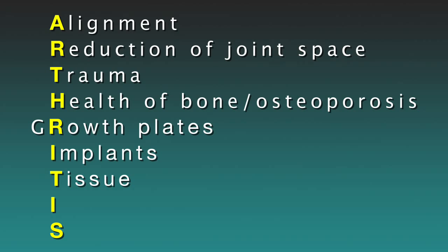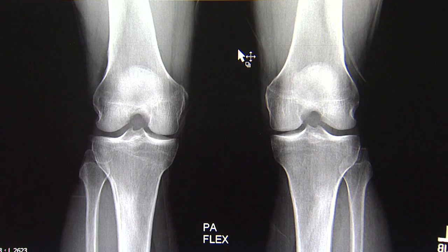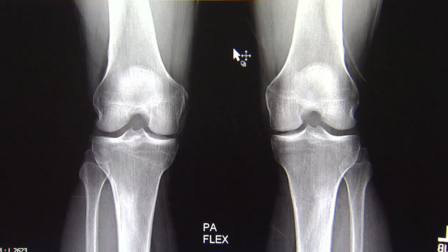The next letter is I, and that stands for ischemia. Ischemia relates to blood flow to the knee. If a patient has calcified vessels or poor circulation, we can actually see calcified vessels on an x-ray, and ischemia can quite frankly be a cause of knee pain.